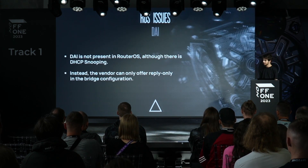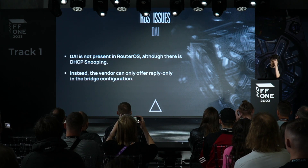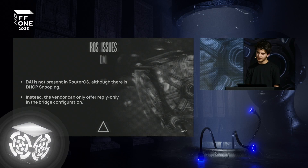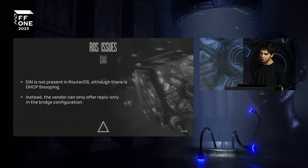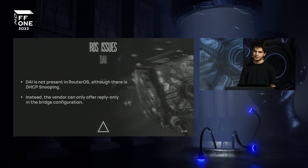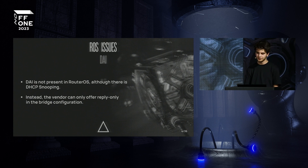The first thing to start with is RouterOS issues. I'm going to discuss certain issues with network security in the context of RouterOS. One of the issues is the absence of a dynamic ARP inspection system. It's a system that prevents ARP spoofing, based on a two-step configuration. It checks ARP packets, and then using a special table, it checks the correspondence between IP addresses and MAC addresses. But this critical element of network security is missing from RouterOS.